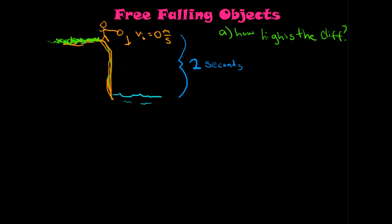So in this problem, imagine you have this diver up here. Imagine he wants to dive down this cliff, but he's not exactly sure how high the cliff is. So he decides he's going to determine how high it is. He has a rock and he drops that rock from the cliff, and he times it with his stopwatch. He hears it hit the water — neglecting sound travel — it hits two seconds later. So the change in time is equal to two seconds. How high is the cliff?